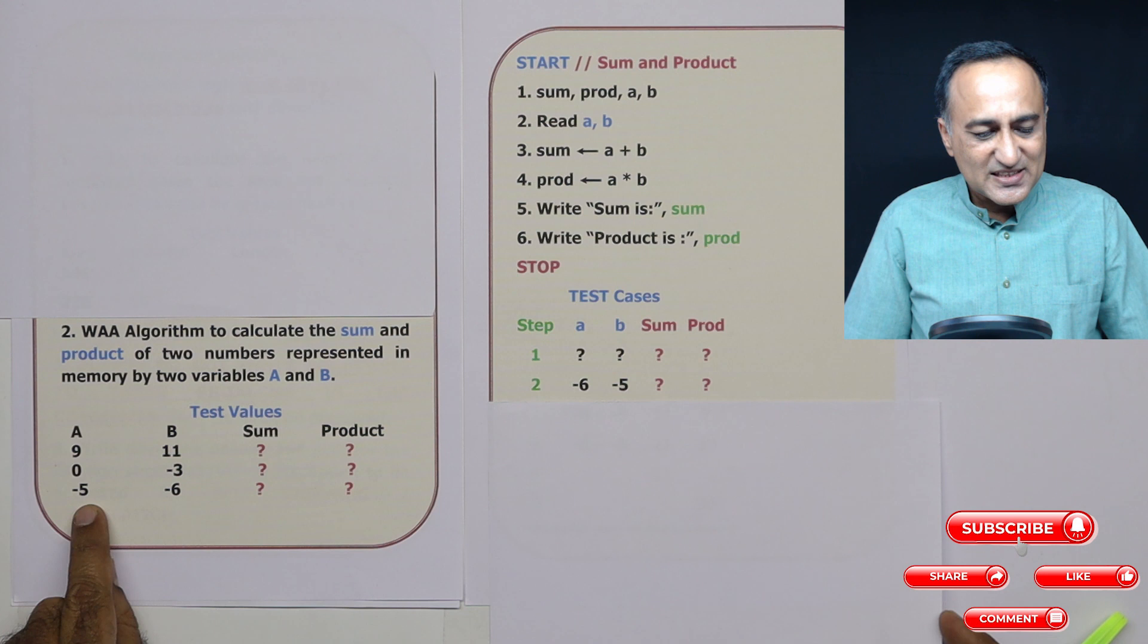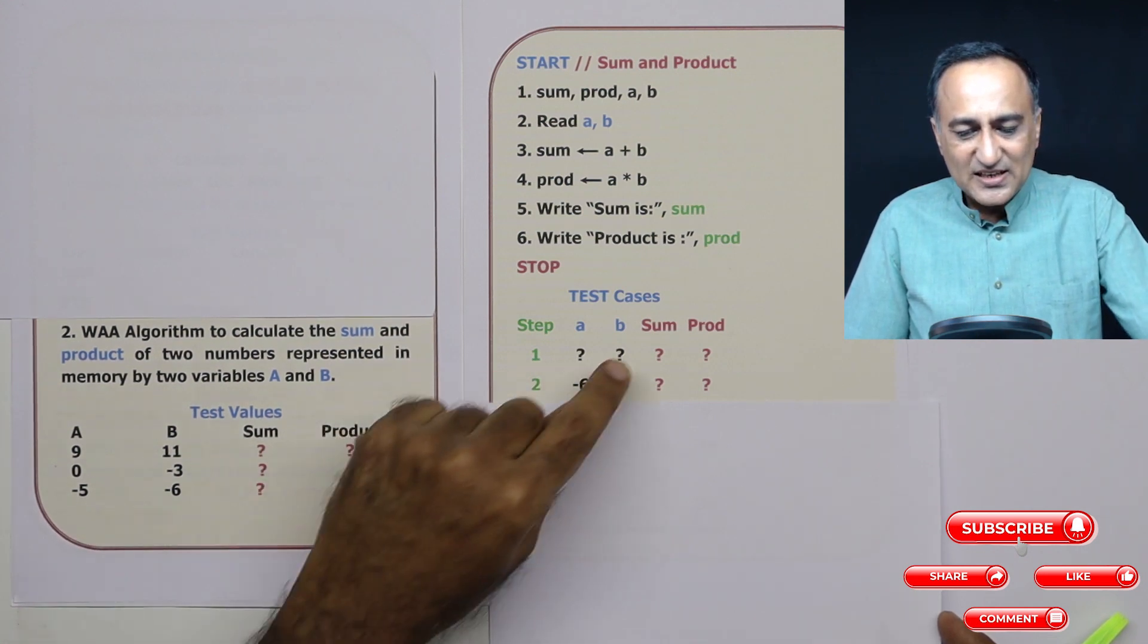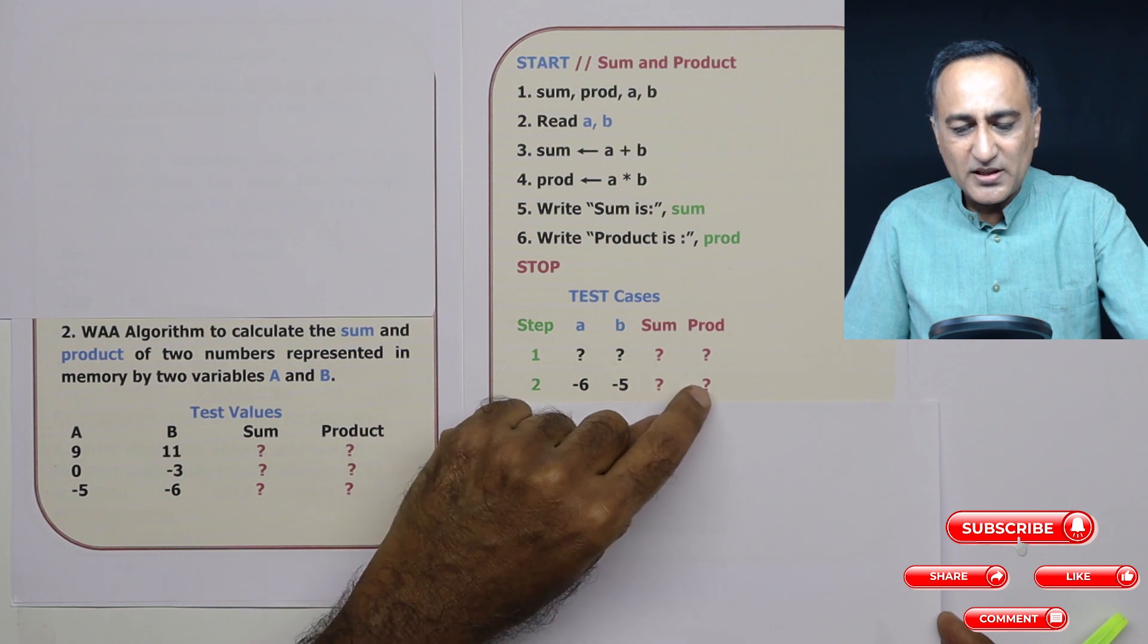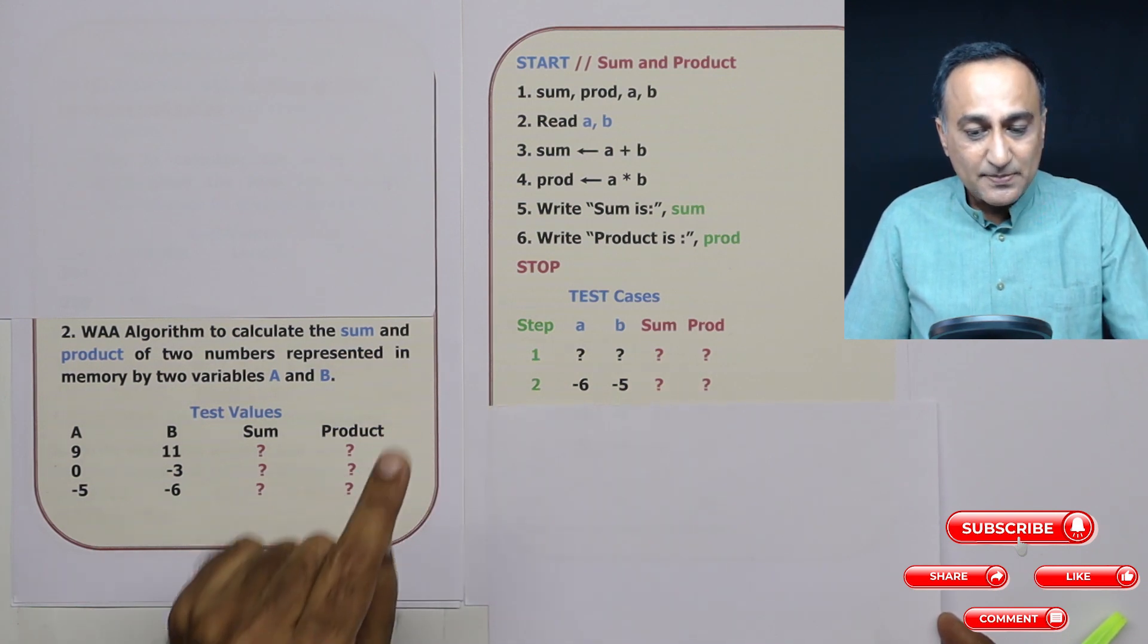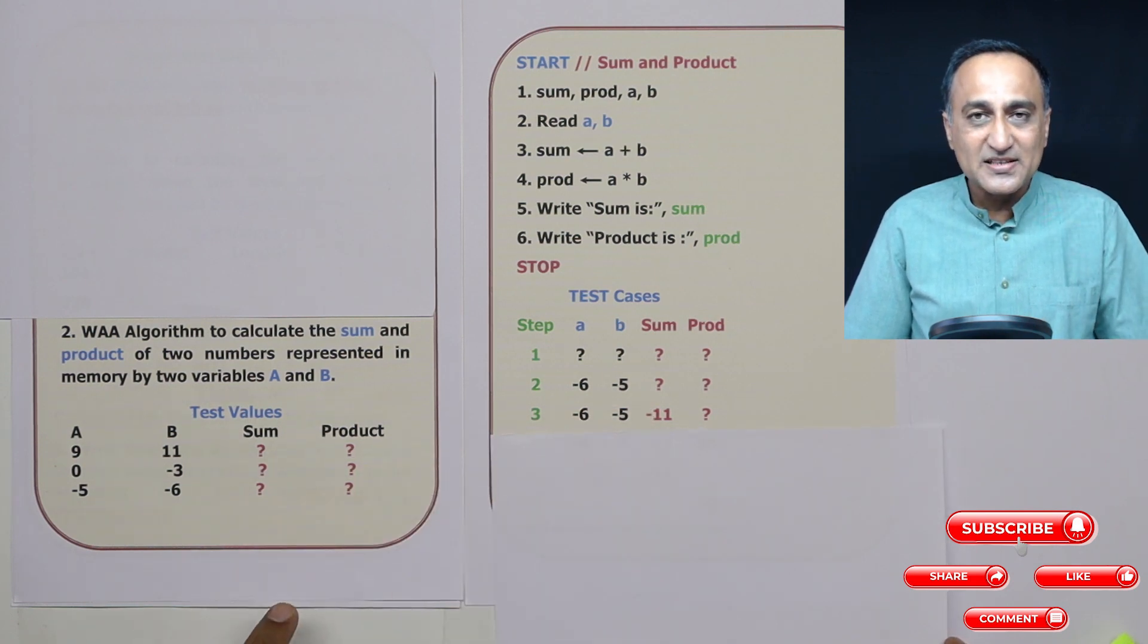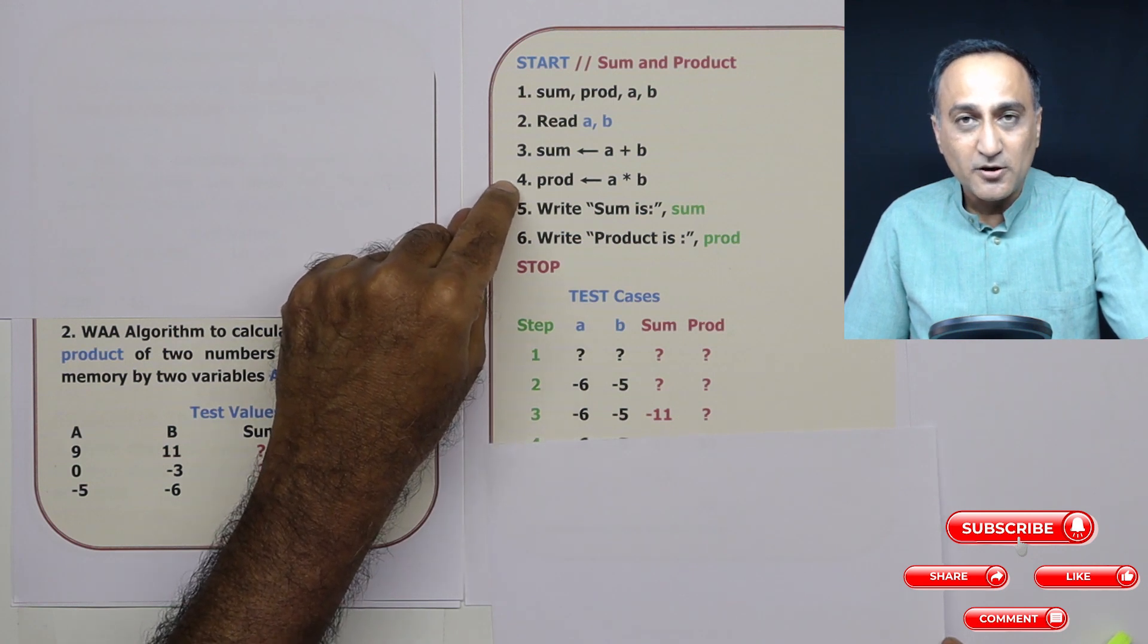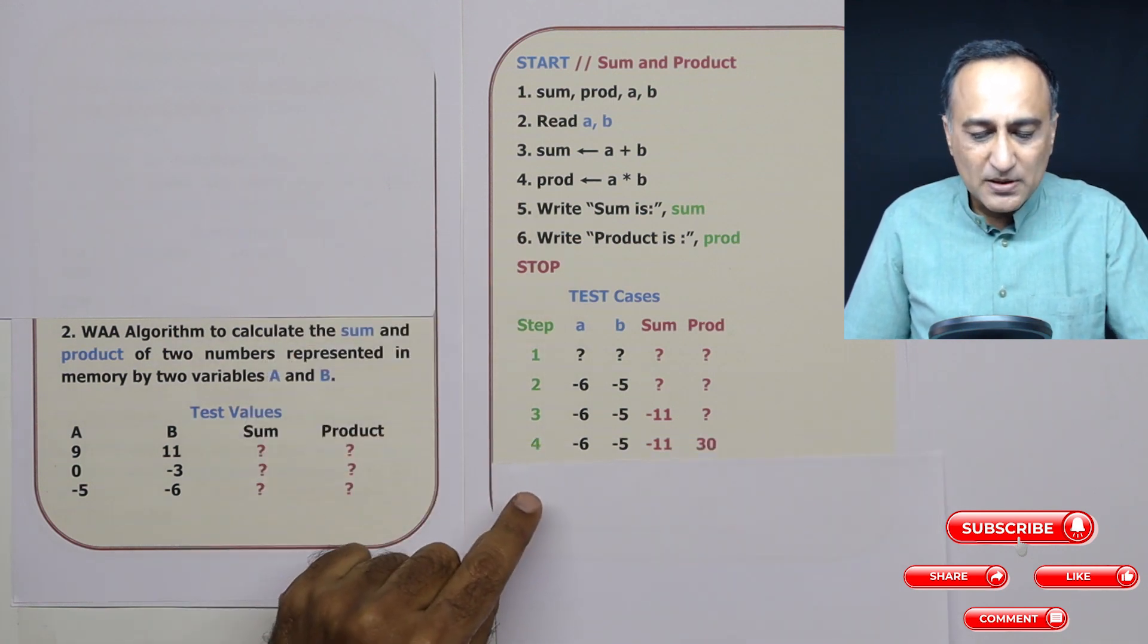In step two, I've taken the last case: A is minus 5 and B is minus 6. At this stage, sum and product are unaffected, still question marks. At step three, sum has changed: minus 6 plus minus 5 is minus 11. Product is still a question mark.